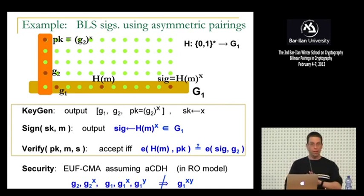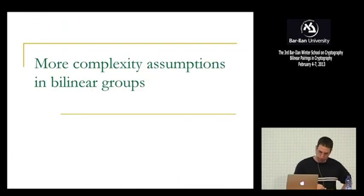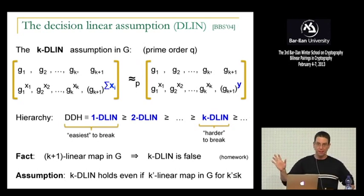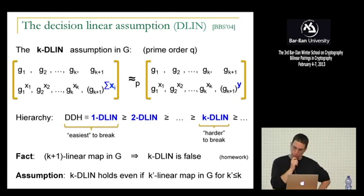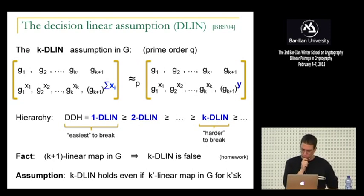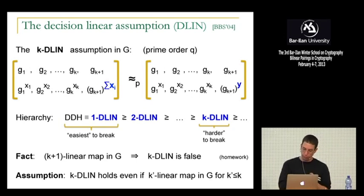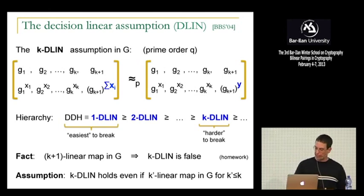Now we're done describing how pairings work. Let's talk about more complexity assumptions. There's a whole zoo of complexity assumptions in this space — all very helpful in constructing different systems. From now on, I'll go back to symmetric pairings (G1 = G2) to keep the presentation simple, and you should mentally translate to asymmetric pairings as needed.